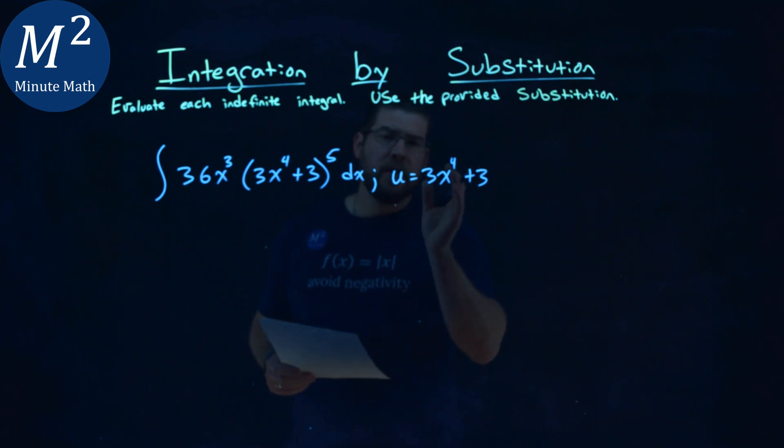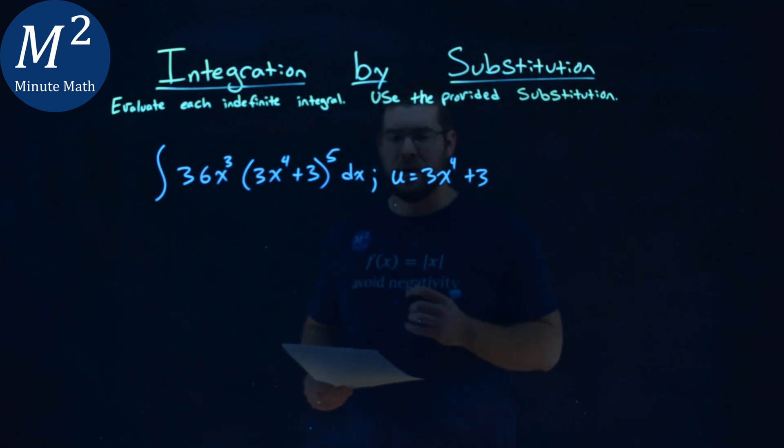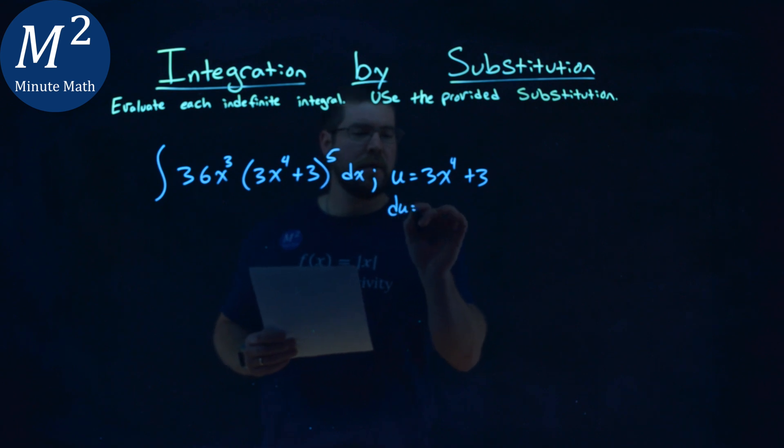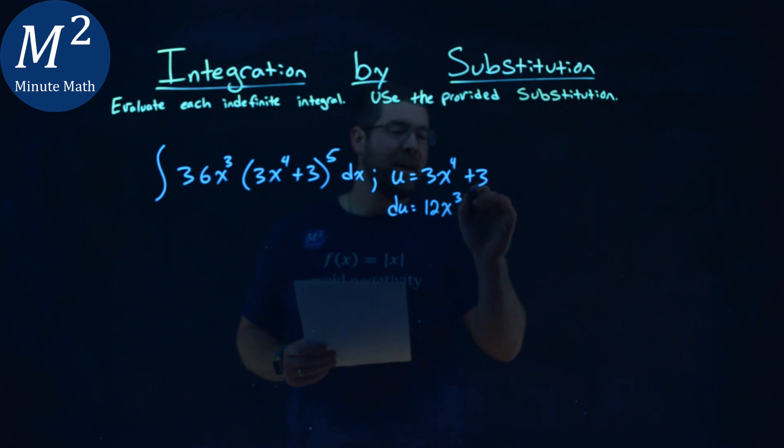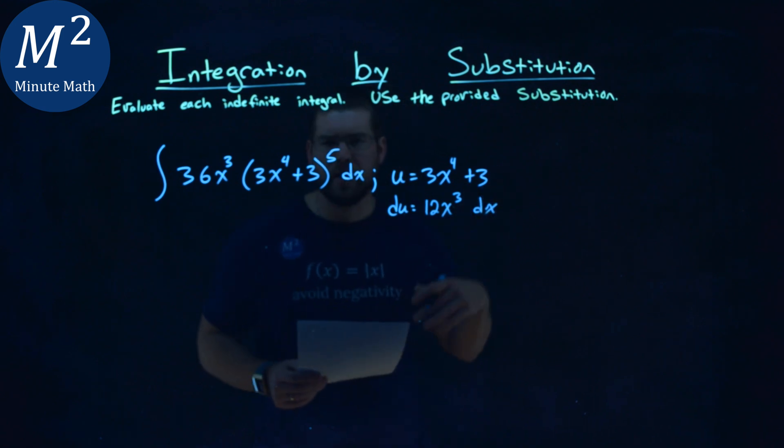Now, they gave us a u value, so from there, I like to find my du value. So my du here is taking the derivative, 4 times 3 is 12x to the 3rd power, and then it's just the dx, ignore the 3.